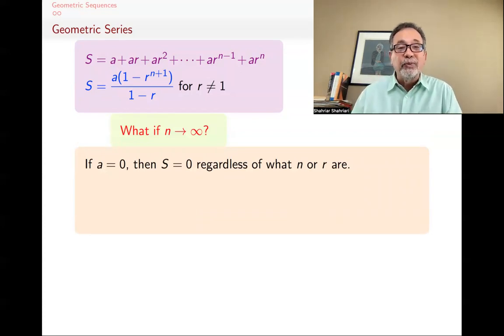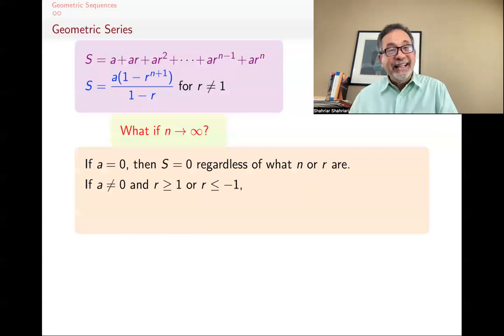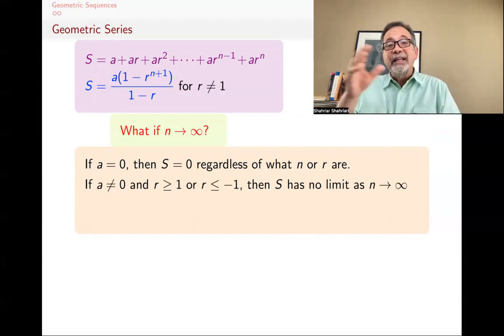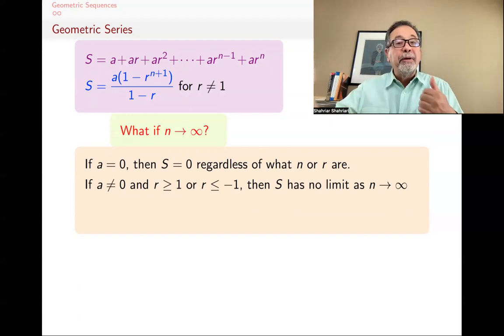And so that's regardless of what n and R are. If A is not 0, and if R is greater or equal to 1, the common ratio, like in our wheat example, it was 2, or if it's less than or equal to minus 1, then S has no limit. So each one of these cases slightly different than the other one, but for example, when R is negative, the terms keep getting positive and negative, positive and negative, positive and negative, but they don't approach any particular limit.